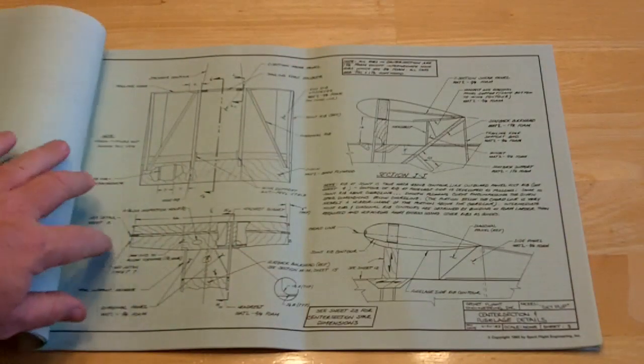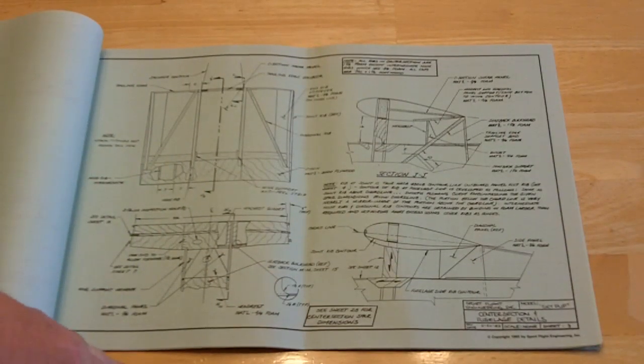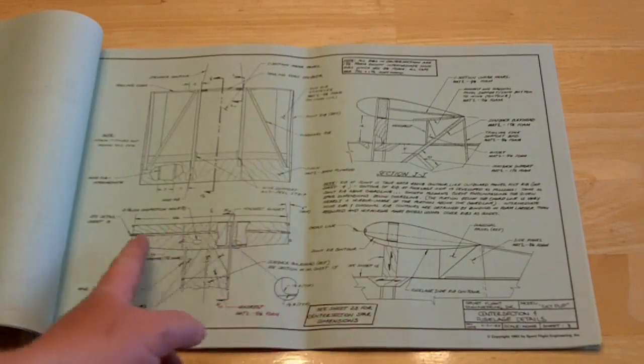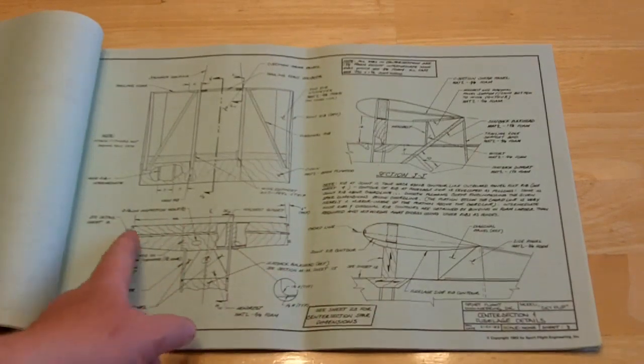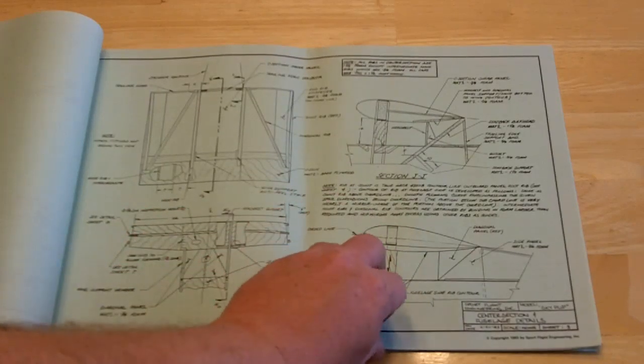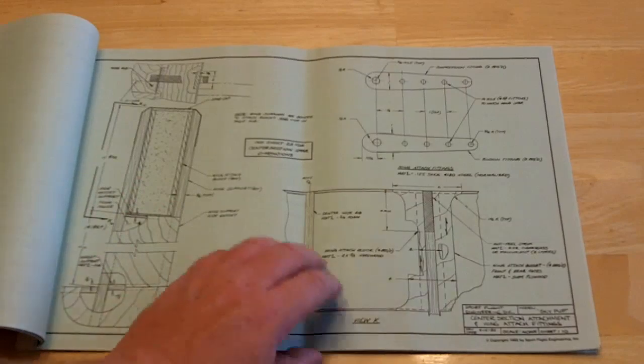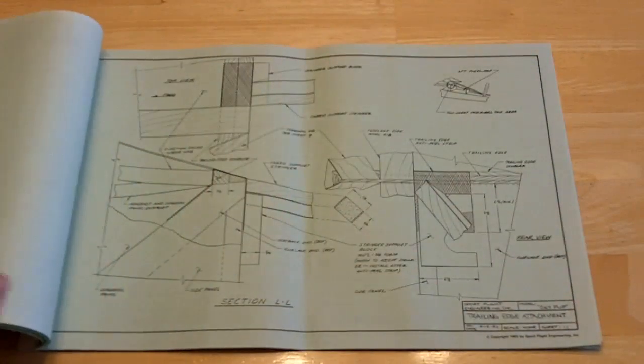To work our way through, you can see here's the center section where it attaches to the fuselage. The wings attach outboard. This is 66 inches. That's your center section. A little more detail there, and we just keep working through.